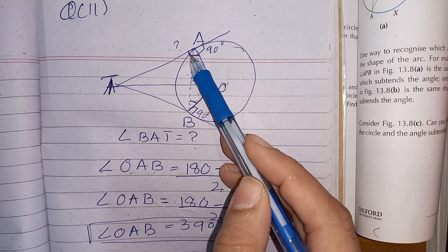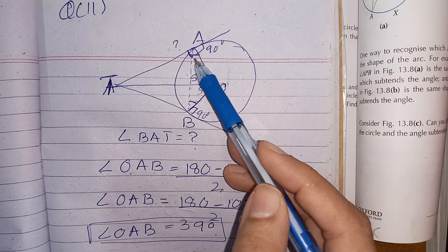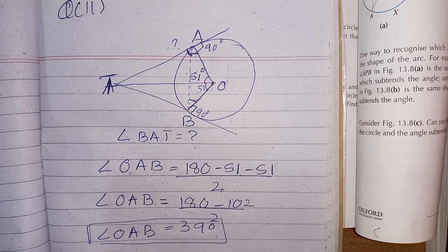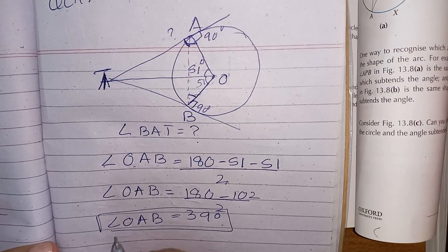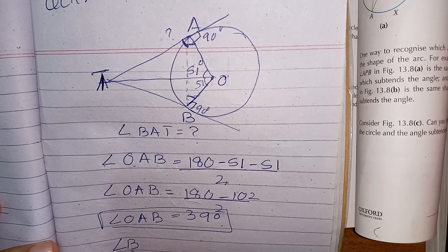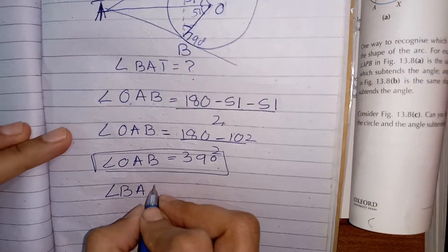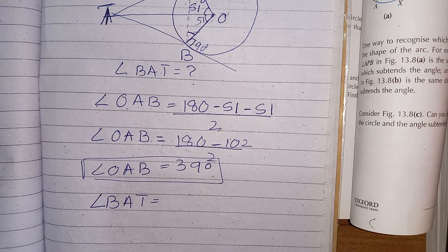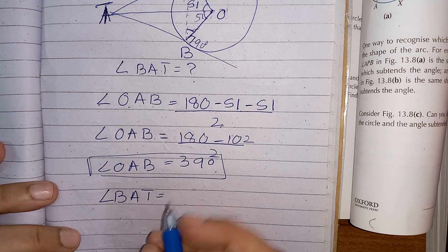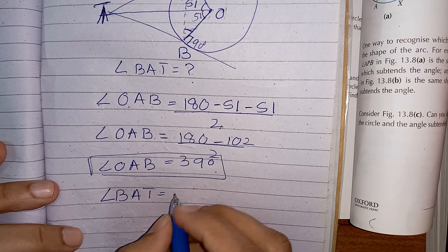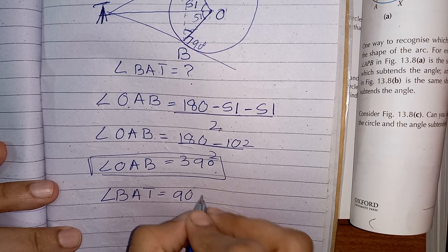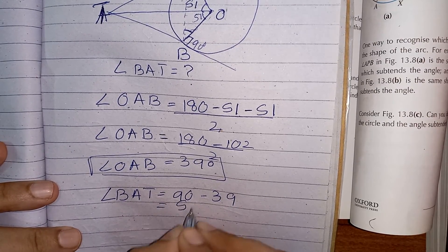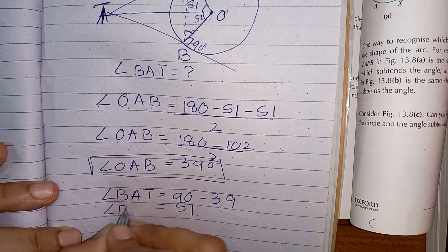Since the whole angle OAT is 90 degrees and angle OAB is 39 degrees, subtracting gives angle BAT = 90 − 39 = 51 degrees.